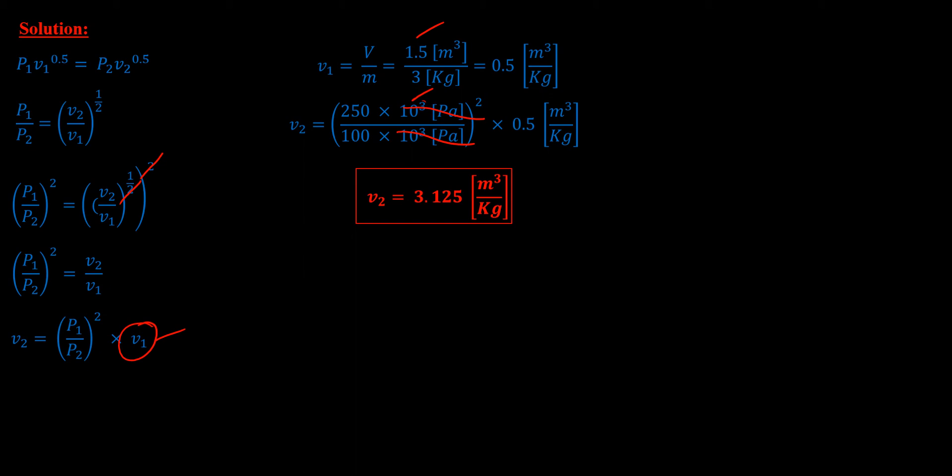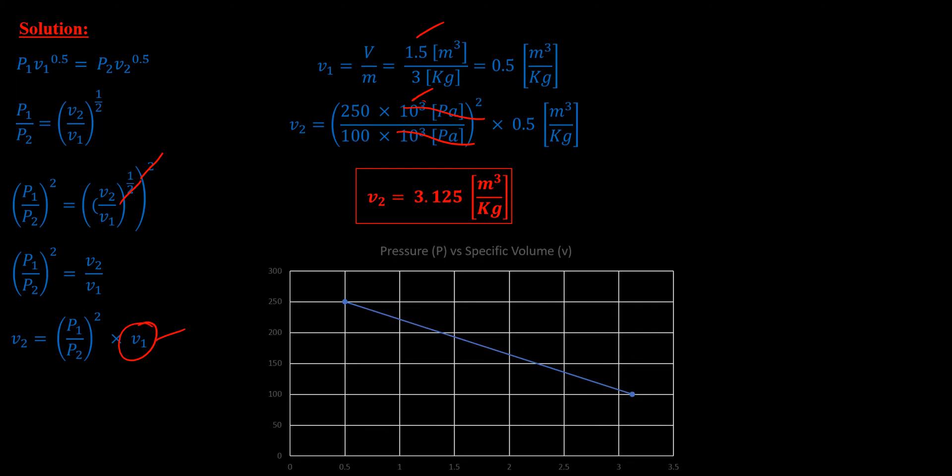Then we plot the pressure versus specific volume. We know that at 250 kilopascals, we found that the volume was 1.5, which means a specific volume of 0.5. At 100 kilopascals, the specific volume is 3.125. As you can see, as the pressure decreases, the volume increases. Thank you very much for watching.